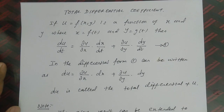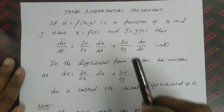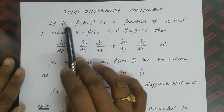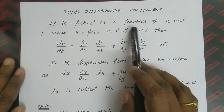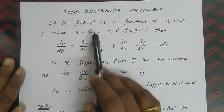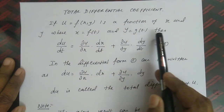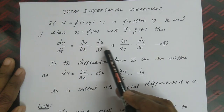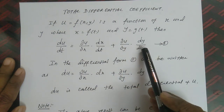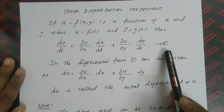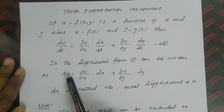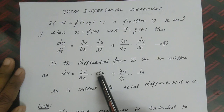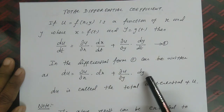Welcome to the lecture series on functions of several variables. Today we are going to discuss the total differential coefficient. If u = f(x, y) is a function of x and y, where x = f(t) and y = g(t), then du/dt = (∂u/∂x)(dx/dt) + (∂u/∂y)(dy/dt). In differential form, this can be written as du = (∂u/∂x)dx + (∂u/∂y)dy. Here, du is called the total differential of u.